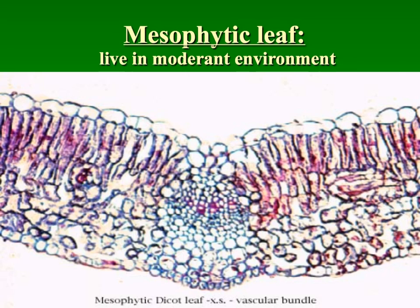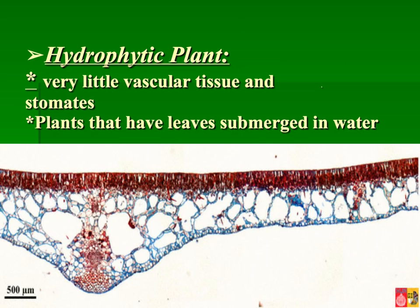This is a mesophytic leaf — the type of leaves found in moderate environments such as Tennessee. We do not have any modifications for extreme temperature or water loss. This is a hydrophytic plant, one that requires very little vascular tissue, so we see a lot of open spaces. These are plants that are submerged in water and are not concerned about losing water, so very little vascular tissue and lots of open spaces.